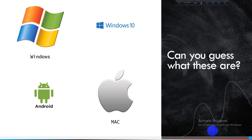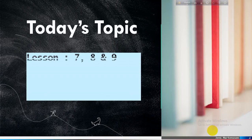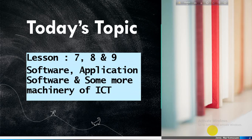Dear students, what are the similarities among these four pictures? The similarity is that these all are software. That's why today our topic is software and application software, and some more machinery of ICT. Today we will discuss lesson 7, lesson 8, and lesson 9.